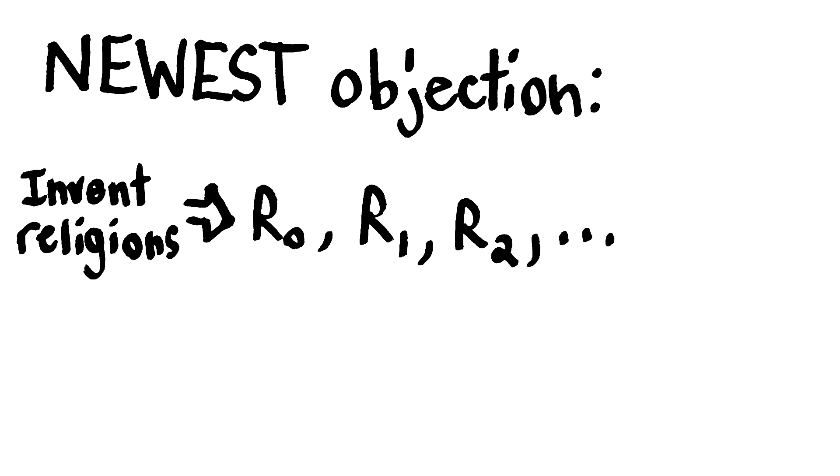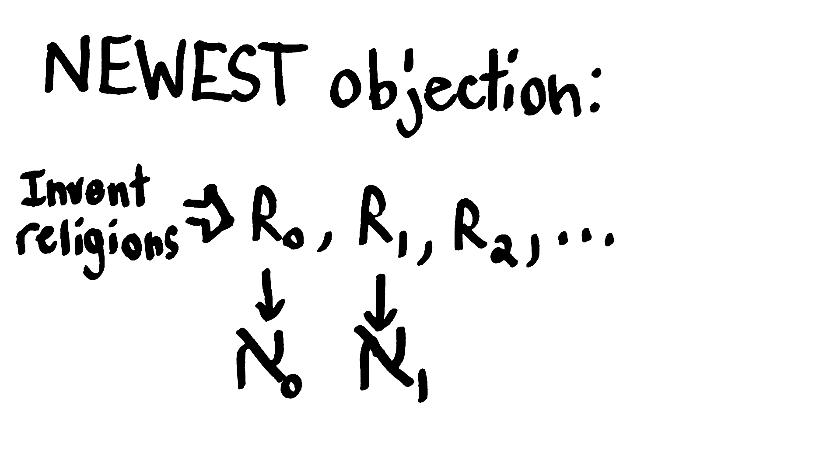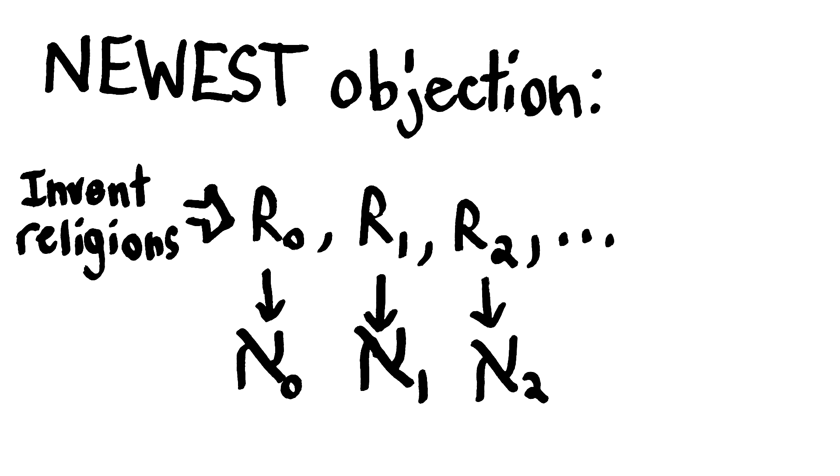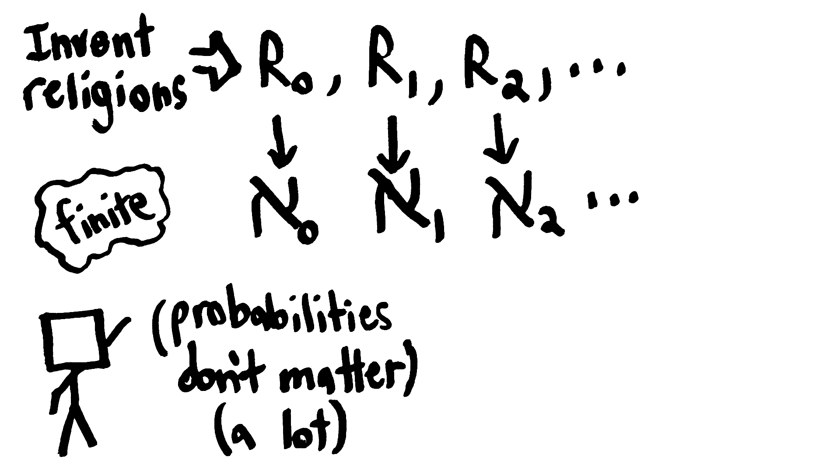Now, the newest objection, the one I came up with, builds off of that one. Let's make up an infinite number of religions, each promising a different infinite utility. Religion 0 promises Aleph 0 utility, Religion 1 promises Aleph 1 utility, and so on. The probabilities of these religions basically don't matter, because the infinities will just absorb them.